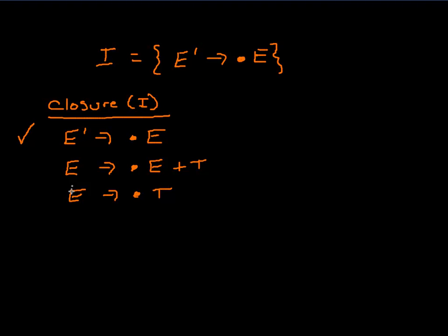We've completed the first iteration of rule two on the initial item. Now we keep applying the rule to all items in I, including the two we just added. For E produces dot E plus T, we again have a dot in front of non-terminal E, so we'd add all the E productions — but they're already in the set from the first iteration, so we're done with this item.